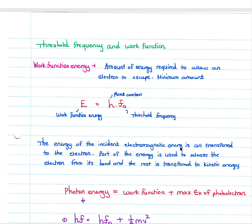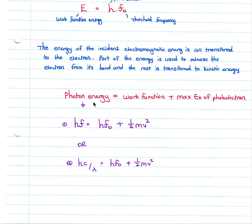The energy of the incident electromagnetic radiation is all transferred to the electron. Part of the energy is used to release the electron from the metal, and the rest is transferred to kinetic energy — that determines how fast the electron leaves the metal. So the photon energy equals the work function — the amount of energy used to release the electron — plus the maximum kinetic energy EK of the electron.